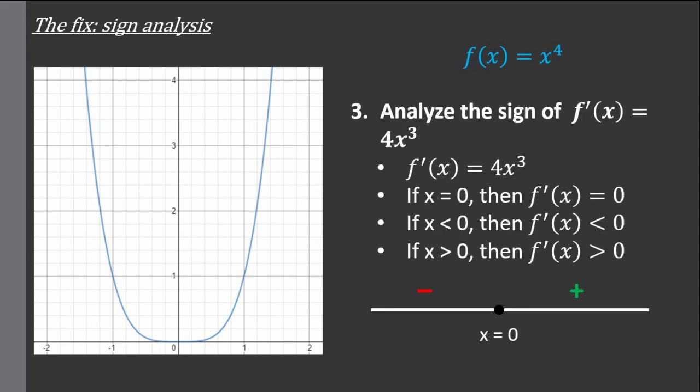We know that at the critical point the first derivative is exactly zero. So we'll see how the first derivative changes as you move slightly left of the critical point — say x takes on a slightly negative value like negative one. We see that the first derivative at x equal to negative one is actually negative, so we put a negative sign left of the critical point. Then we check slightly to the right — say x equals positive one — and the first derivative will be positive. So we have negative on the left and then positive on the right, which means this is a local min, and of course this agrees with the graph.